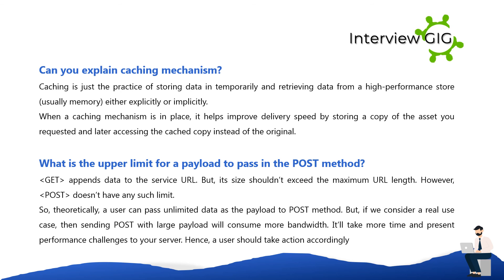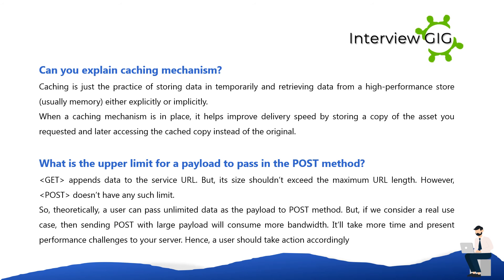Can you explain the caching mechanism? Caching is the practice of storing data temporarily and retrieving data from a high-performance store, usually memory, either explicitly or implicitly. When a caching mechanism is in place, it helps improve delivery speed by storing a copy of the requested asset and later accessing the cached copy instead of the original.